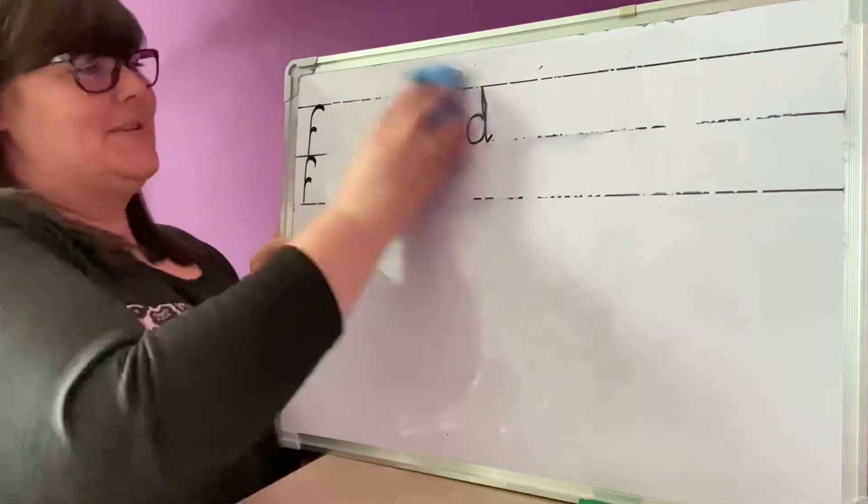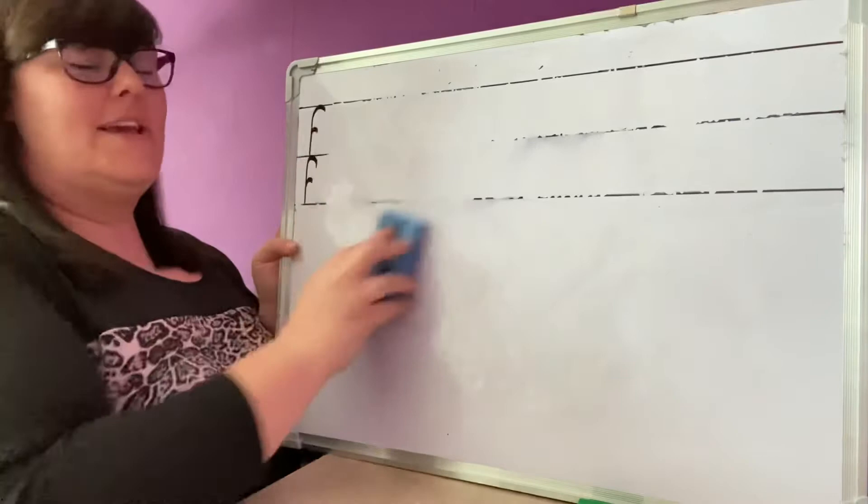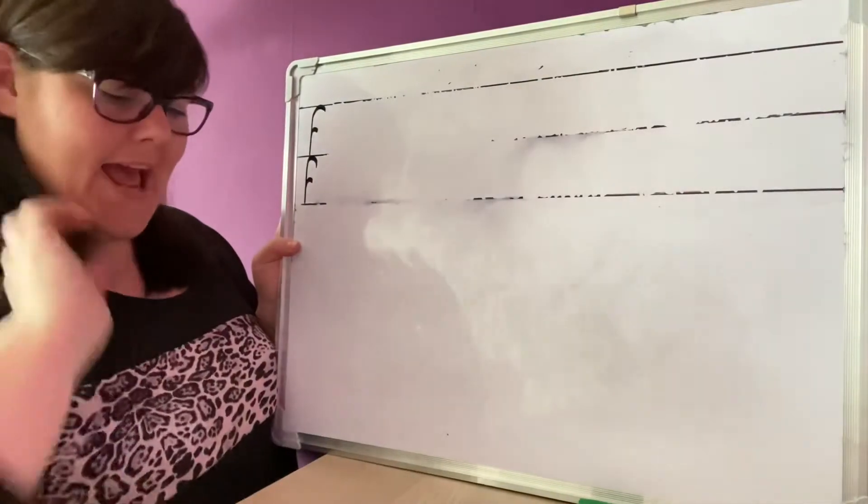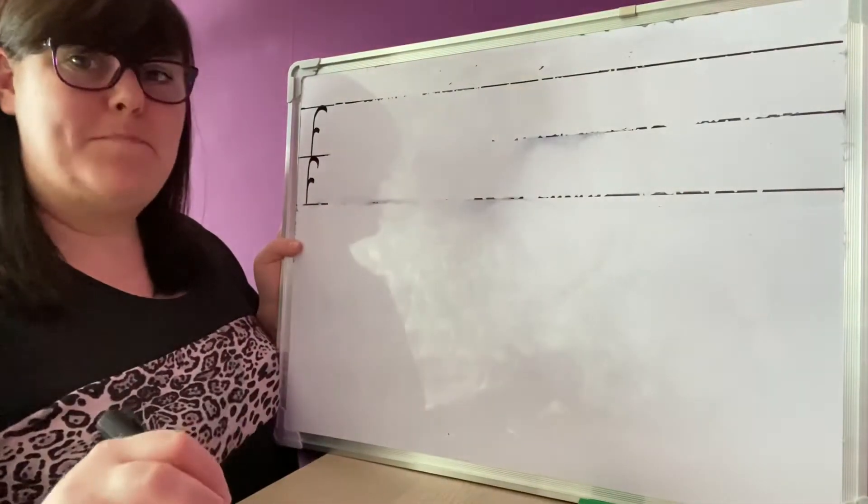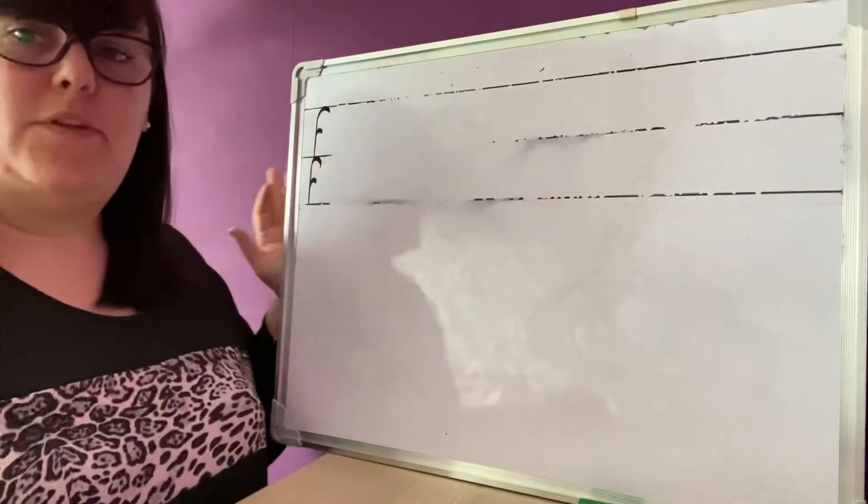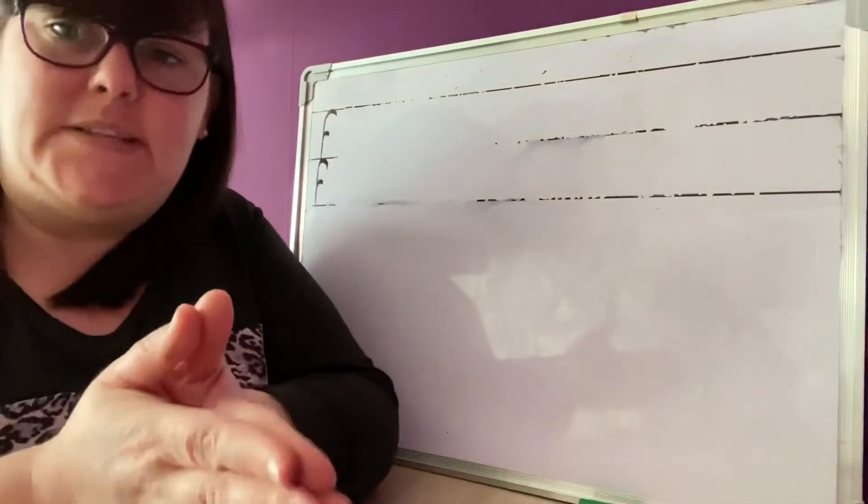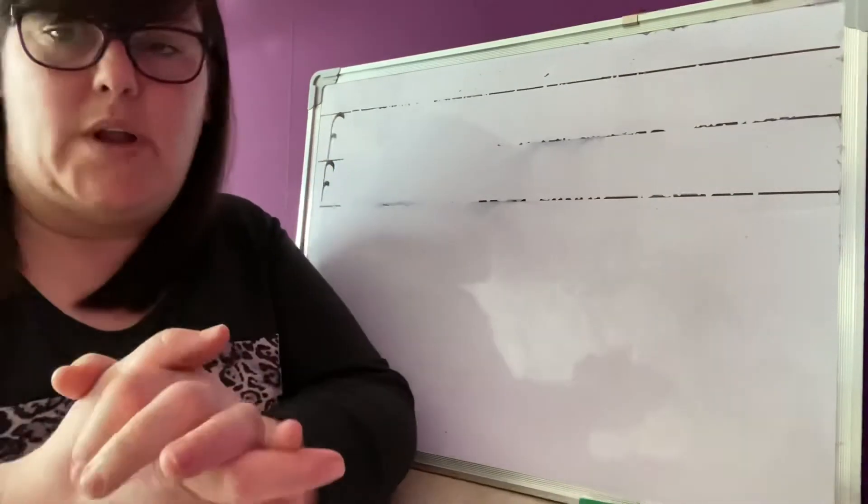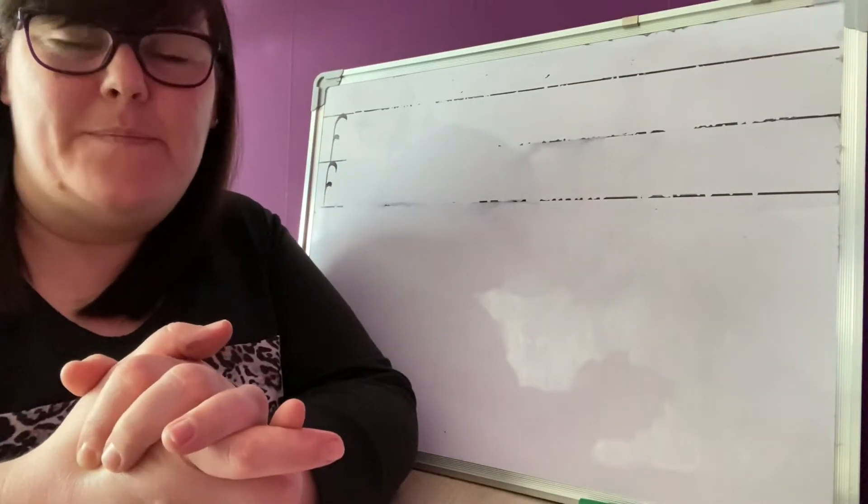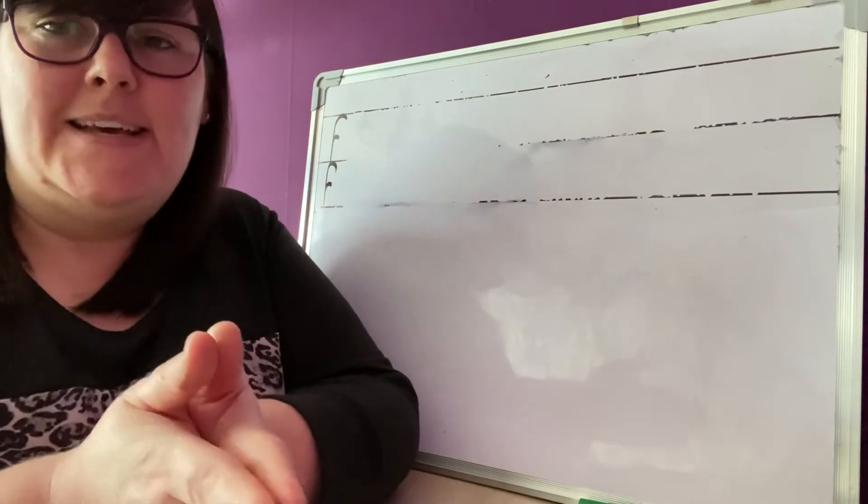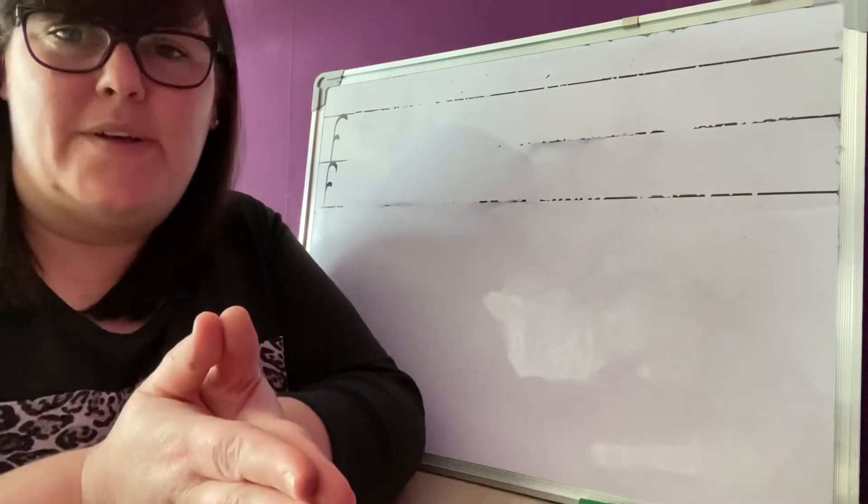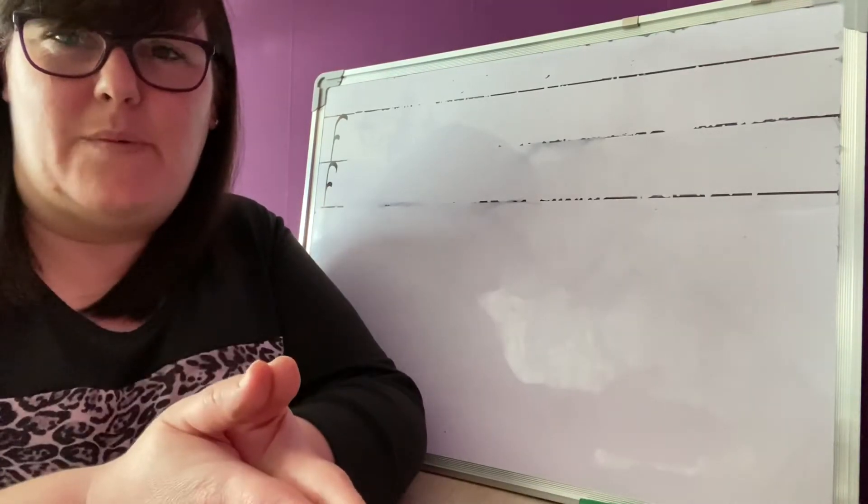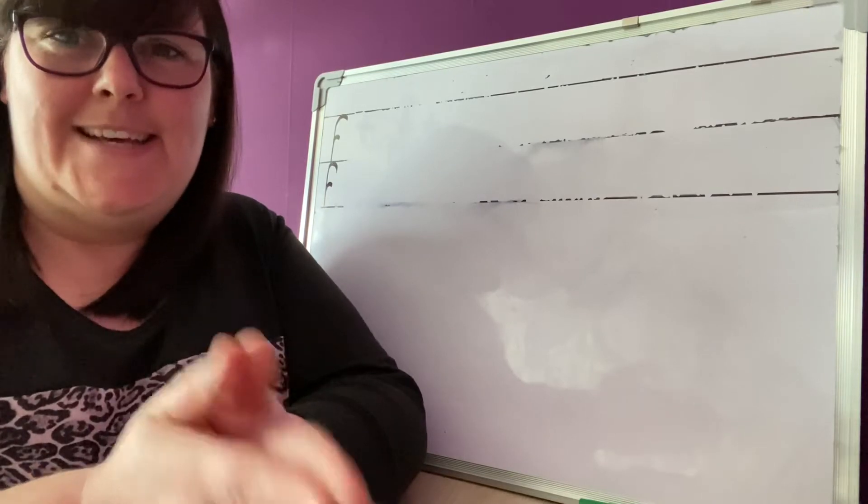Well done, everybody. Okay, that's our reading done. Now it's time for some word building. So I'm going to give you the word. Remember we have to clap the syllables first and then we're going to segment it. So the first one, cat-nap. Ready? Clap it. Cat-nap. So what's the first syllable that we're going to segment? Cat.